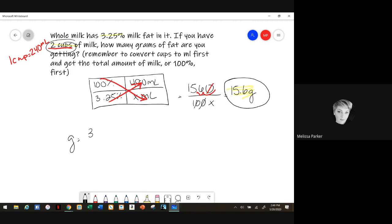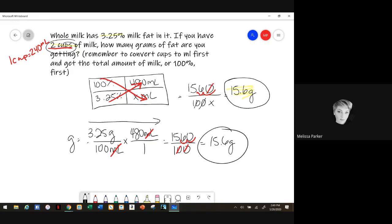All right, now if you want to do dimensional analysis, then you would have your 3.25 grams over 100 ml, then you would have your 480 ml over 1. And then you multiply 3.25 times 480, you get 1560 over 100, you get the same answer again. All right, so this is lecture 16, this was problem one.